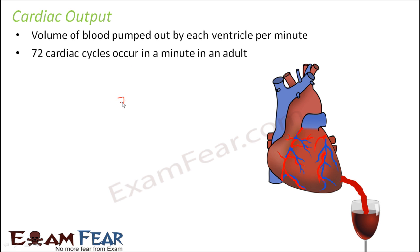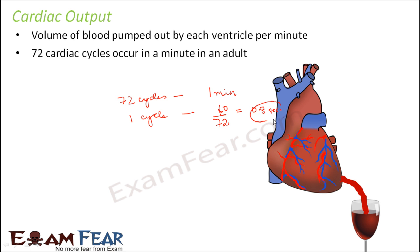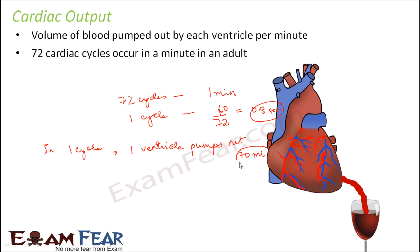If 72 cycles take place in one minute, then one cardiac cycle takes 60 seconds divided by 72, which equals 0.8 seconds. It has also been observed that in one cardiac cycle, one ventricle pumps out around 70 millilitres of blood. This volume of blood pumped out by one ventricle in one cardiac cycle is known as the stroke volume.